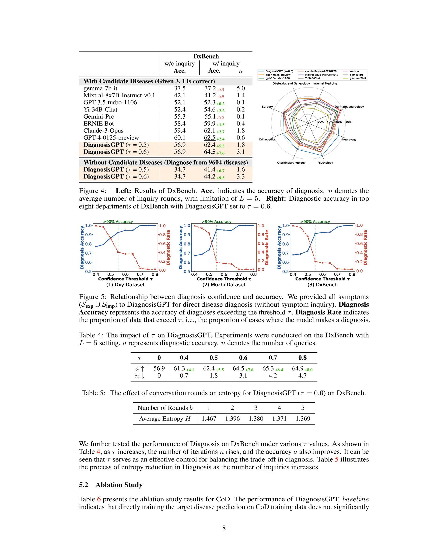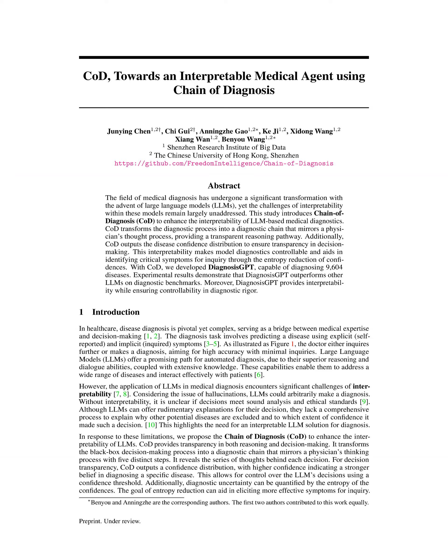Step 4 — Confidence Assessment: After reasoning, COD produces a confidence distribution indicating the model's likelihood of diagnosing each disease. This distribution is essential for decision-making as it quantifies the model's confidence and helps ensure that the diagnosis aligns with the patient's symptoms.